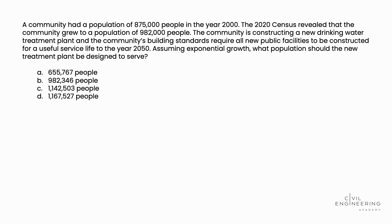Welcome back to Civil Engineering Academy. This is Matt, and today we tackle a problem from the P.E. Civil Water Resources Exam. A community had a population of 875,000 people in the year 2000. The 2020 census revealed that the community grew to a population of 982,000 people. The community is constructing a new drinking water treatment plant, and the community's building standards require all new public facilities to be constructed to a useful service life to the year 2050. Assuming exponential growth, what population should the new treatment plant be designed to serve?